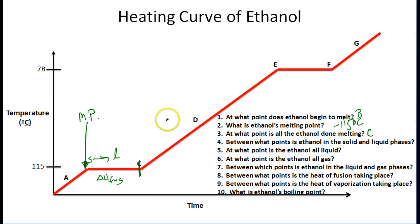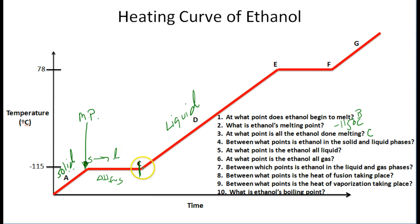At point C, all the ethanol is done being melted, leaving you with all liquid ethanol. So we have solid ethanol, then solid and liquid ethanol as solid is converted into liquid, and at point C all the solid ethanol is done melting, leaving liquid ethanol. Question four: between what points is ethanol in the solid and liquid phase? That is between points B and C on the heating curve.